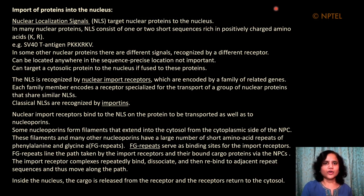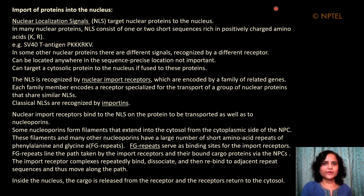The classical NLSs are the ones rich in lysines and arginines, and these are recognized by transport receptors known as importins. The nuclear import receptors bind to the NLS on the protein to be transported as well as to the nucleoporins. Some nucleoporins form filaments that extend into the cytosol from the cytoplasmic side of the nuclear pore complex. These filaments and other nucleoporins have a very large number of short amino acid repeats of phenylalanine and glycine, referred to as FG repeats, which serve as binding sites for the import receptors.